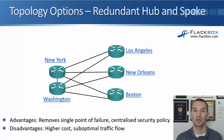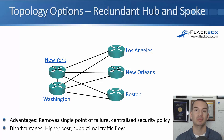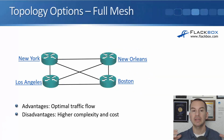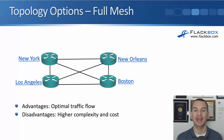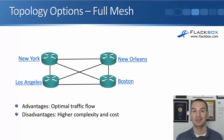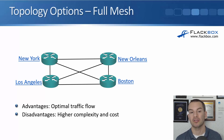The disadvantages of redundant hub and spoke are that cost goes up — we've doubled the number of links — and it's still suboptimal traffic flow because traffic between branches is still going via the hub site. The next topology option is a full mesh, where we connect every office to every other office. The advantage is optimal traffic flow since traffic takes the direct path. The disadvantage is higher complexity and higher cost because of the many more links required.